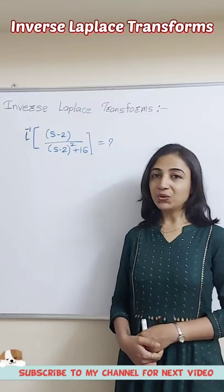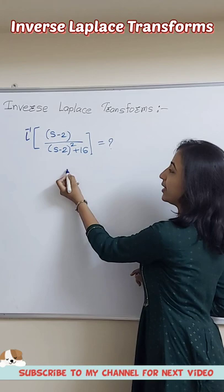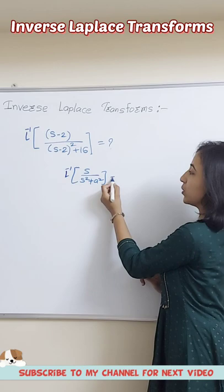How to find the Laplace inverse of this type of function? We know that the Laplace inverse of S upon S squared plus A squared is cos(At).